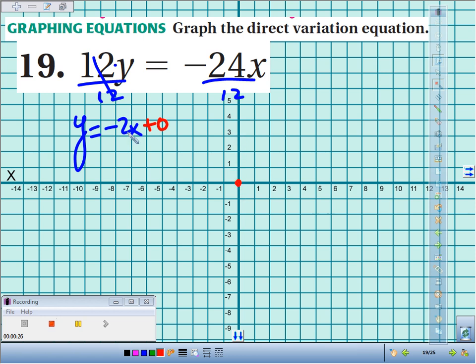To move to another point, look to your slope, negative 2. If you think of it as a fraction, it's negative 2 over 1. So to move to another point, you go down 2, right 1, down 2, right 1.